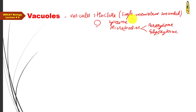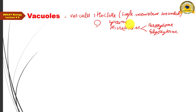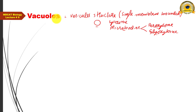Vacuoles are similar vesicular structures, but unlike lysosomes, peroxisomes, and glyoxysomes, which must contain enzymes, vacuoles are structures in which enzymes may or may not be present. The presence of enzymes is not a compulsory feature for vacuoles.